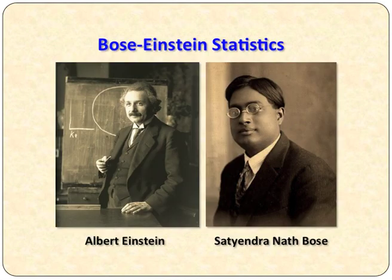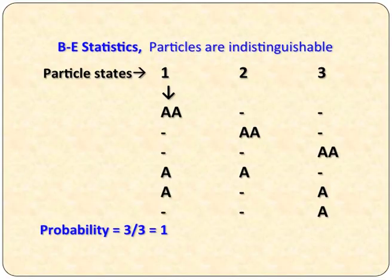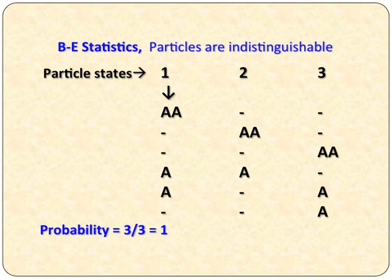Another kind of statistics is Bose-Einstein statistics. If any particles obey Bose-Einstein laws, then you call them bosons. The terminology was given by Satyendranath Bose with the help of Albert Einstein. In Bose-Einstein statistics, particles are indistinguishable — unlike Maxwell-Boltzmann statistics where particles are distinguishable. Since a equals b here, the occupancy equals six positions for two particles, three positions occupied by a, three remaining, giving probability equal to 1.